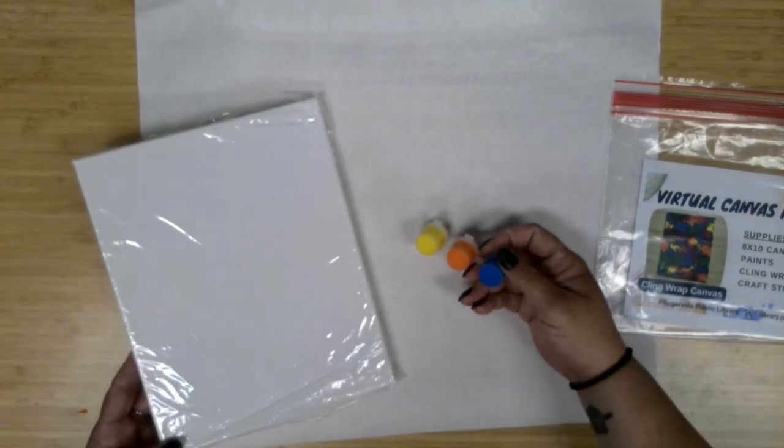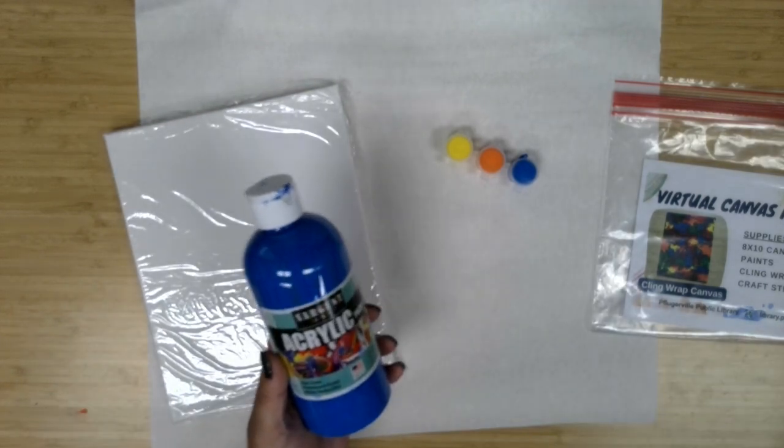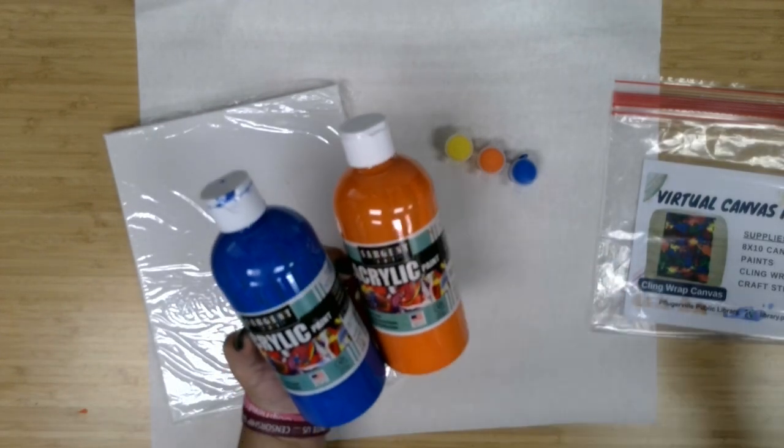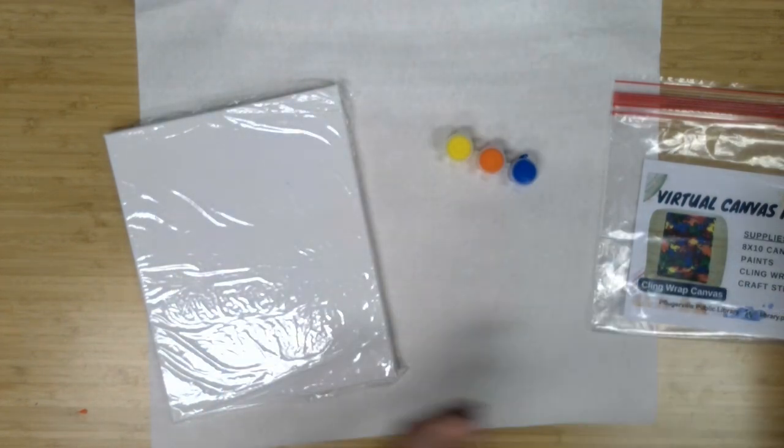The paints we have, we've given three colors. This month we are using the Sargent Art acrylic. They are the spectral, so spectral blue, spectral orange, and spectral yellow. So those are some nice bright colors we're going to use.